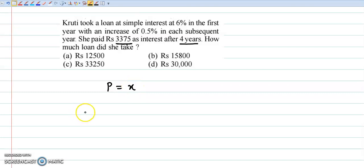So let the principal borrowed be X. 4 years of interest is 3375 and every year the interest rate is 0.5% increase. The first year rate is 6%. We will use the formula which is PNR upon 100.